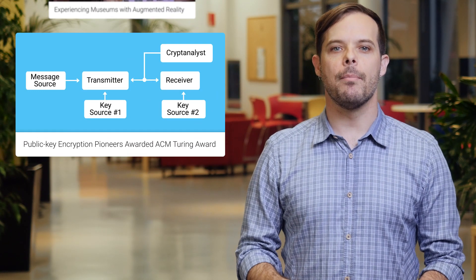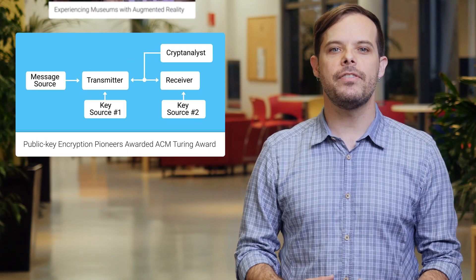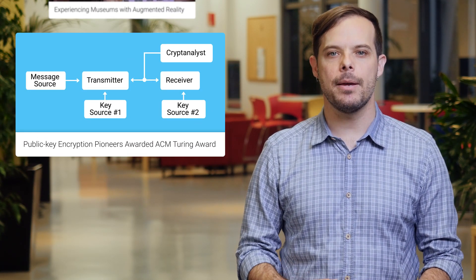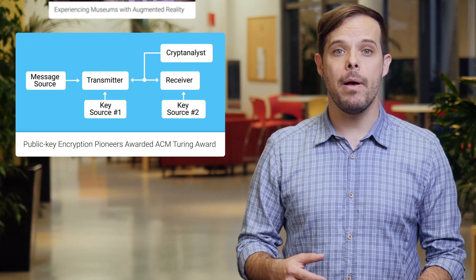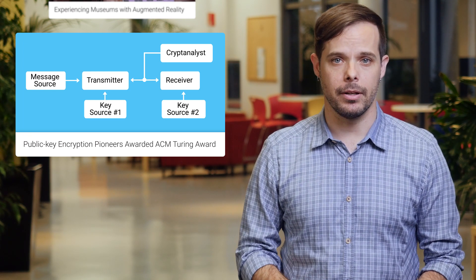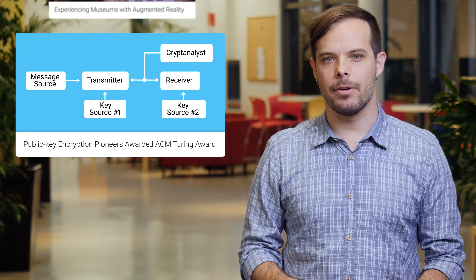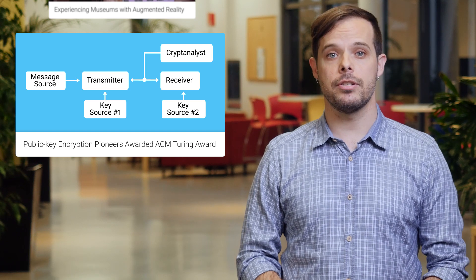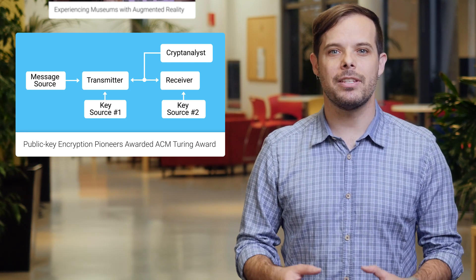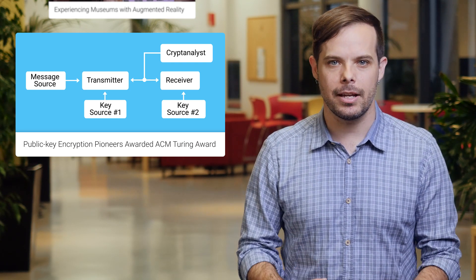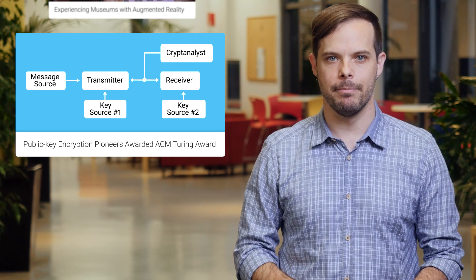Whitfield Diffie and Martin E. Hellman have won the 2015 ACM Turing Award, commonly known as the Nobel Prize of Computing. Their 1976 paper entitled New Directions in Cryptography introduced public key encryption, which is a foundational technology for the commercial World Wide Web.